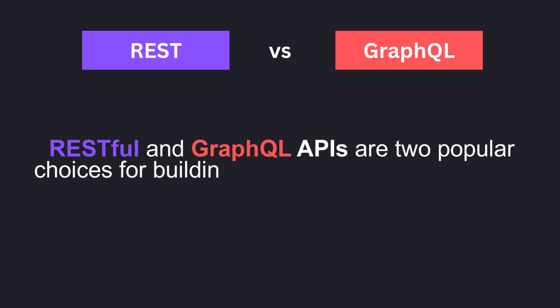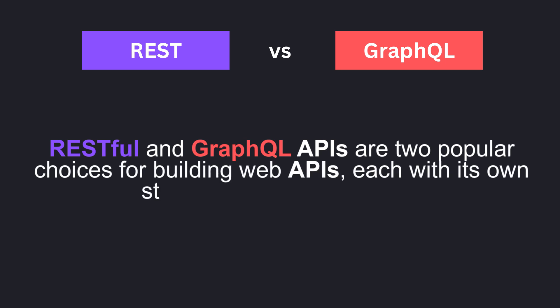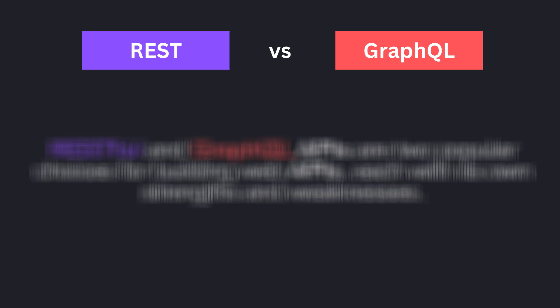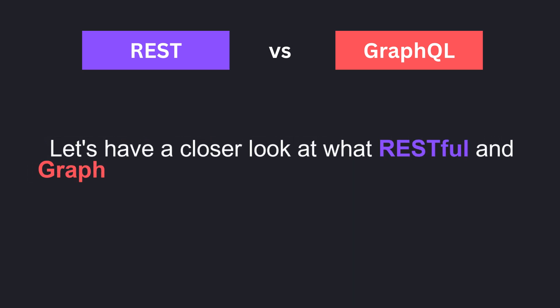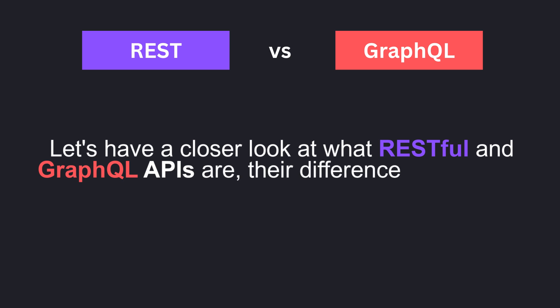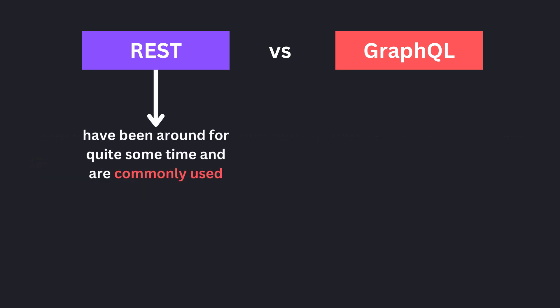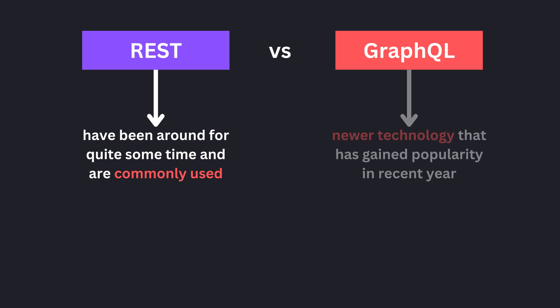RESTful and GraphQL APIs are two popular choices for building web APIs, each with its own strengths and weaknesses. Let's have a closer look at what RESTful and GraphQL APIs are, their differences, and when to choose one over the other. RESTful APIs have been around for quite some time and are commonly used, while GraphQL is a newer technology that has gained popularity in recent years.